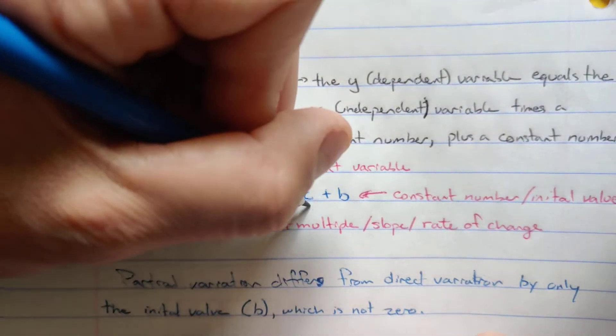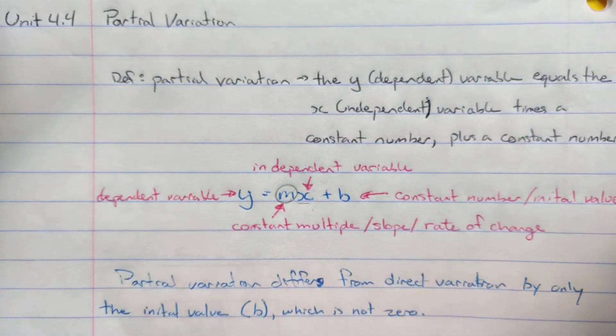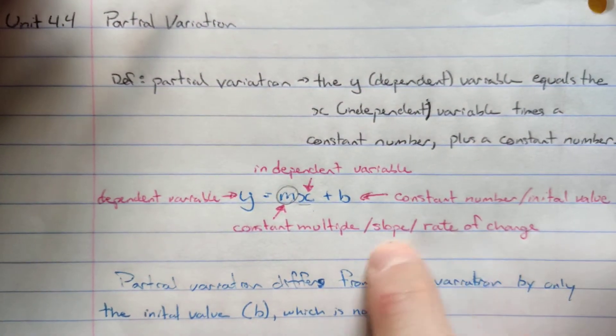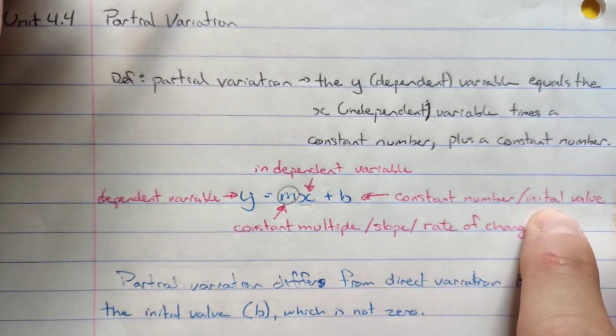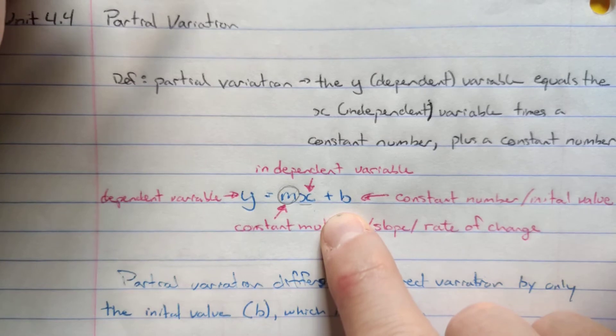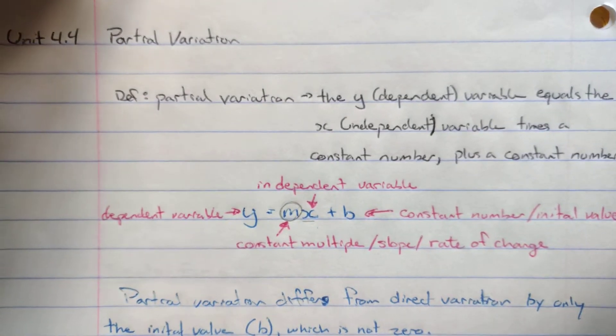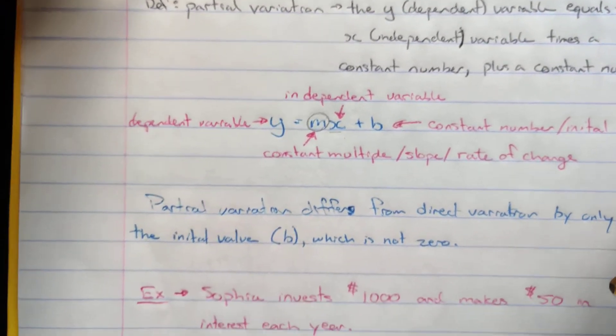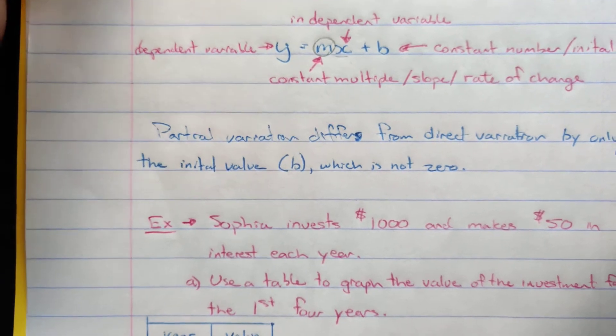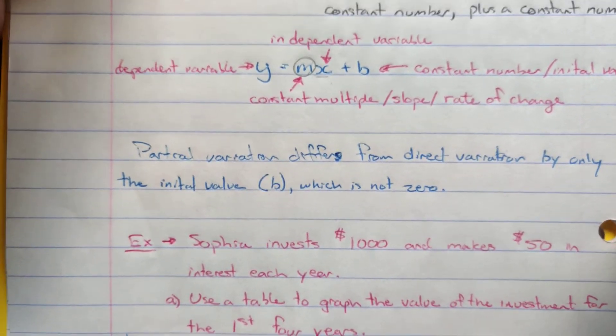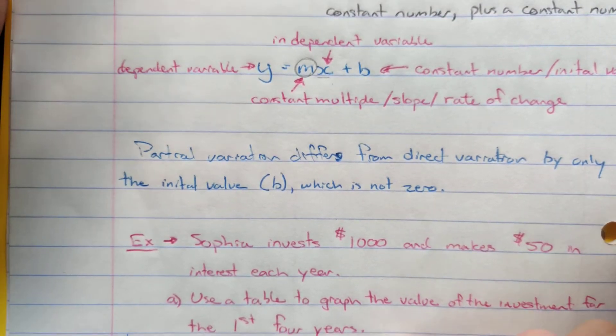The idea is that the constant multiple, the number with the x being multiplied, that's our rate of change, our slope. And then that's our constant value or our initial value. So our initial value here is b. Whatever we add there, that's going to be our initial value. That's where we're going to cross the y-axis. So that's the only difference between partial and direct variation, is where the graph crosses the y-axis. Partial variation is going to cross at a value other than zero. And the direct variation crosses at zero.